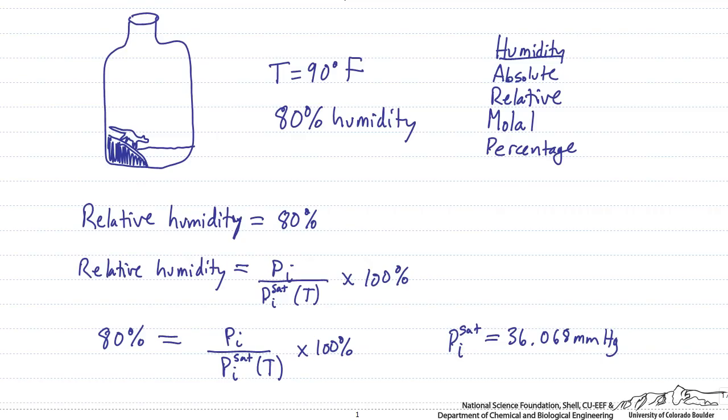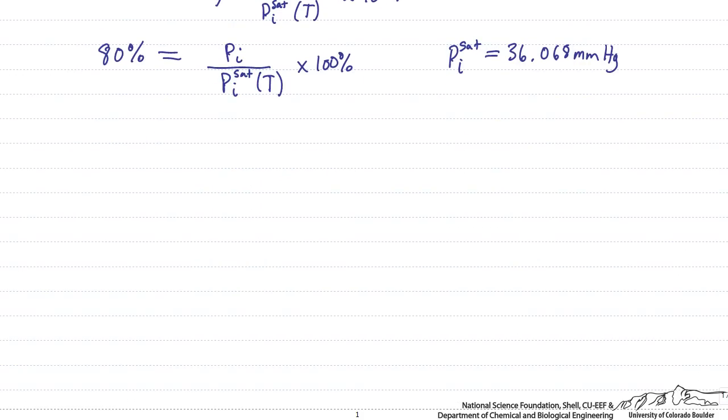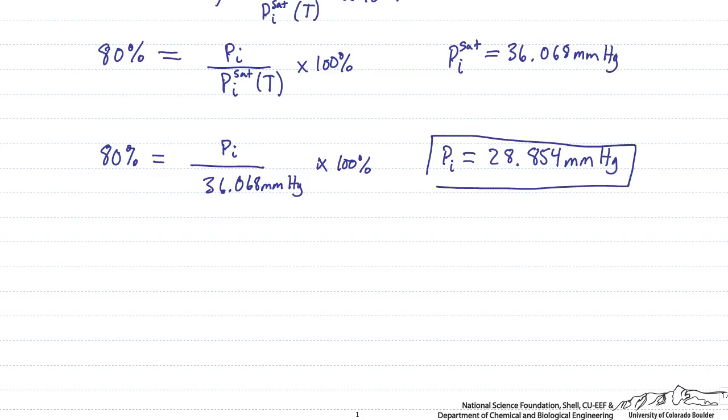So now that we have the saturation pressure, we can use this to calculate what the partial pressure of component I is in our system. So plugging in our numbers and solving for the partial pressure of component I, which is the water in the system, we find that the partial pressure is 28.854 millimeters of mercury. So now we've solved for the partial pressure of the water in our system.